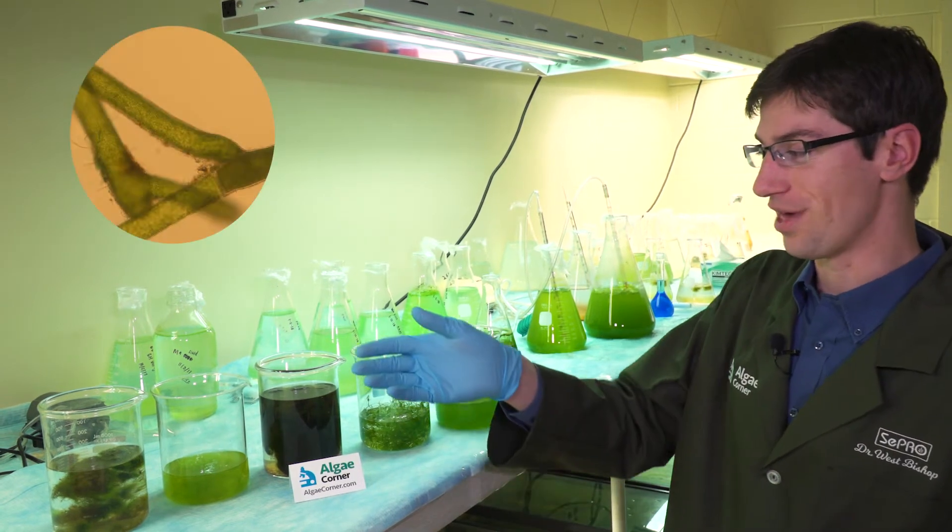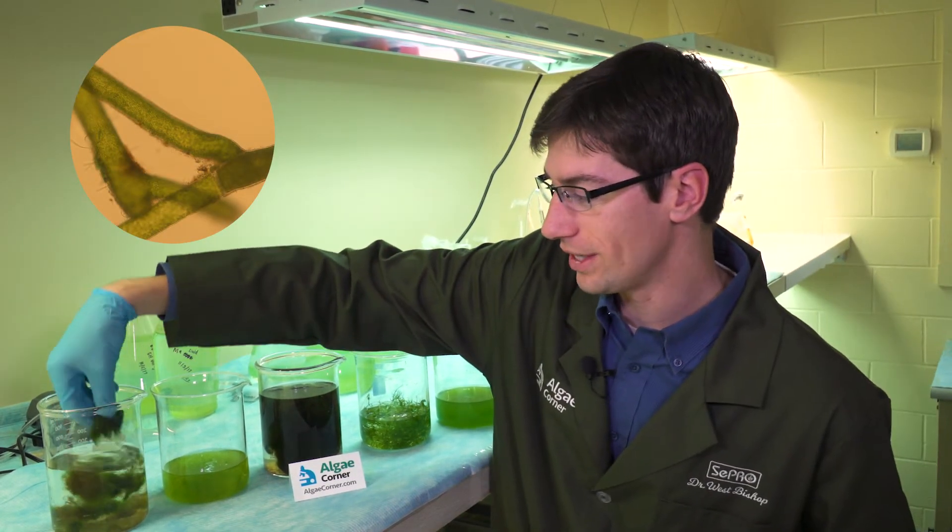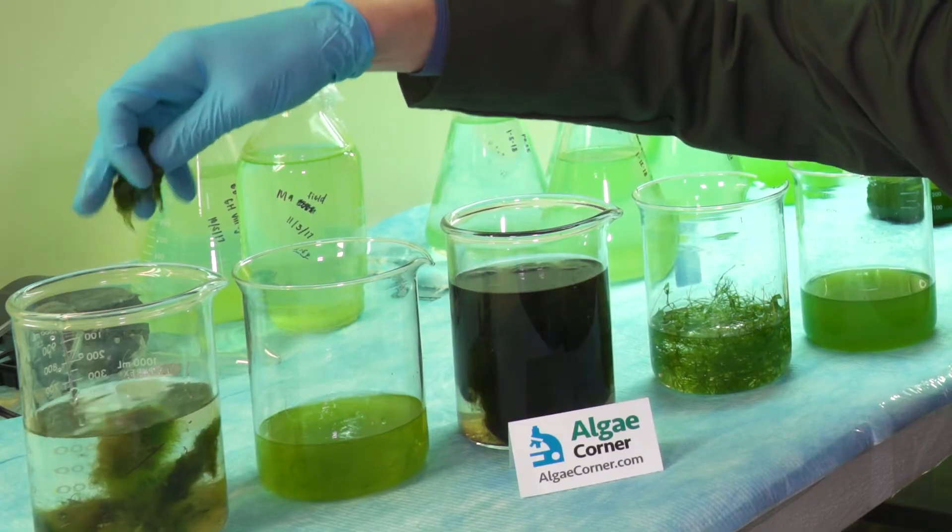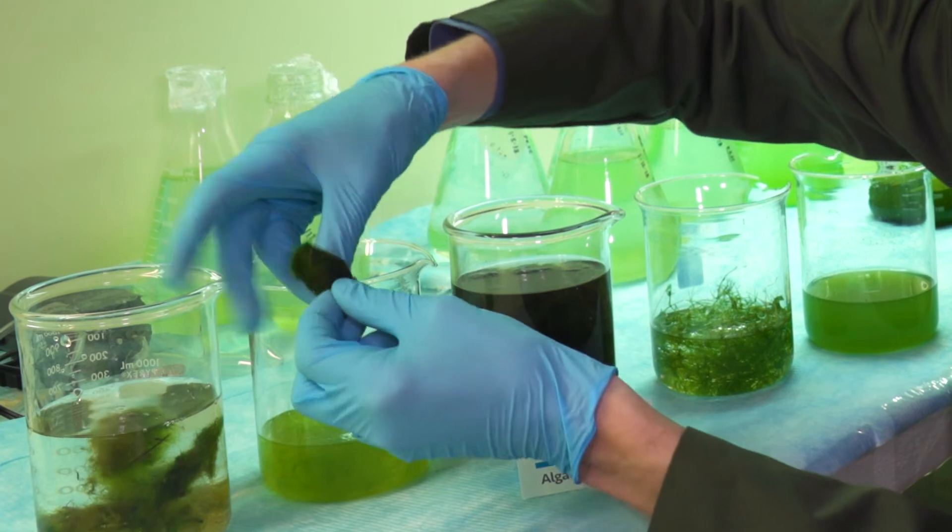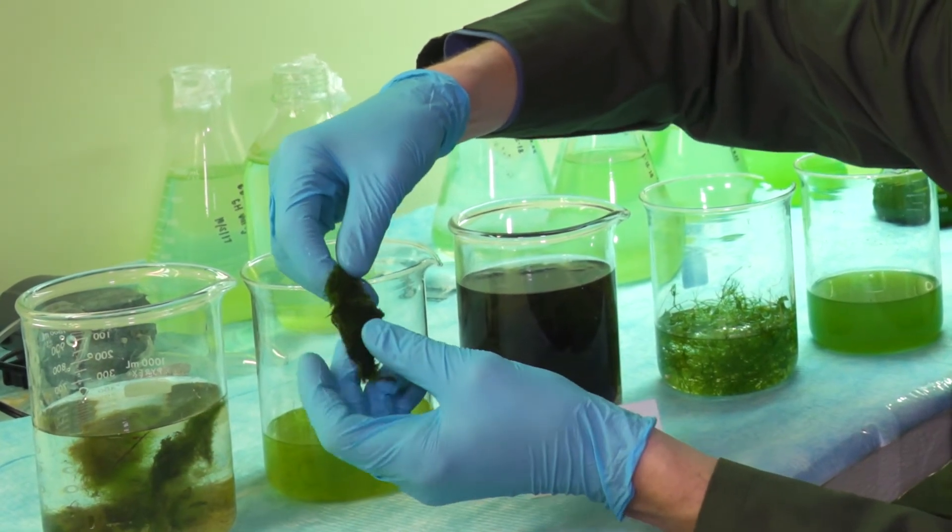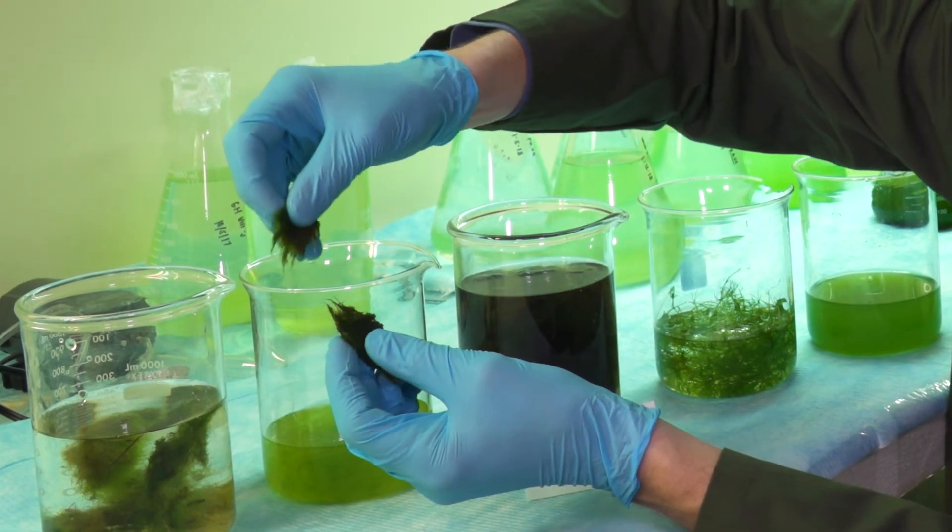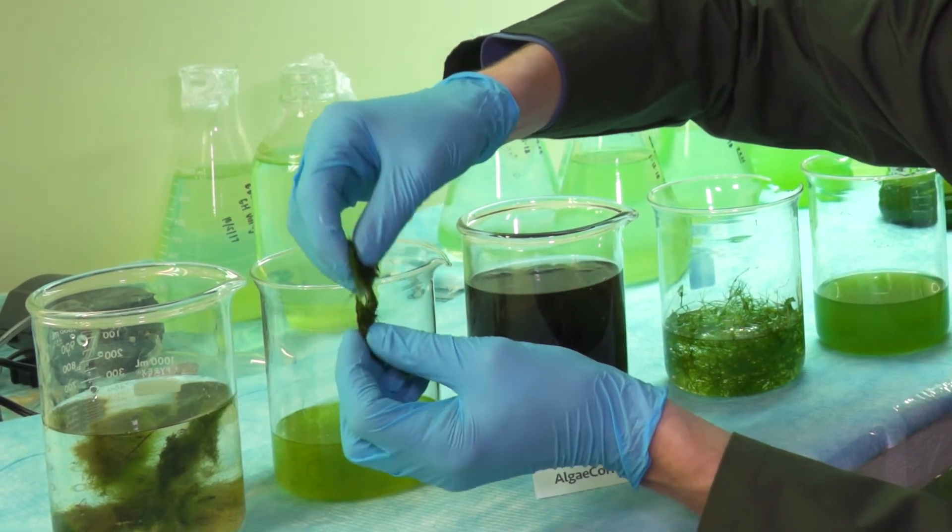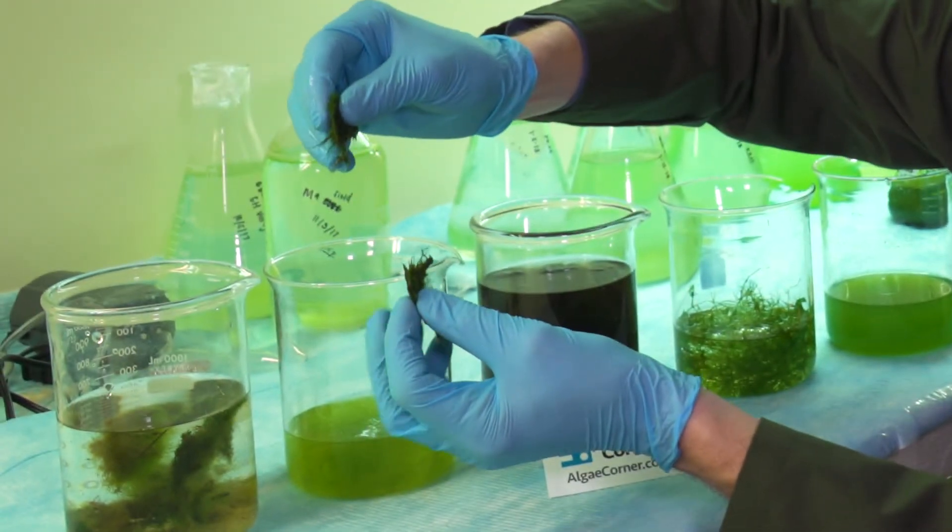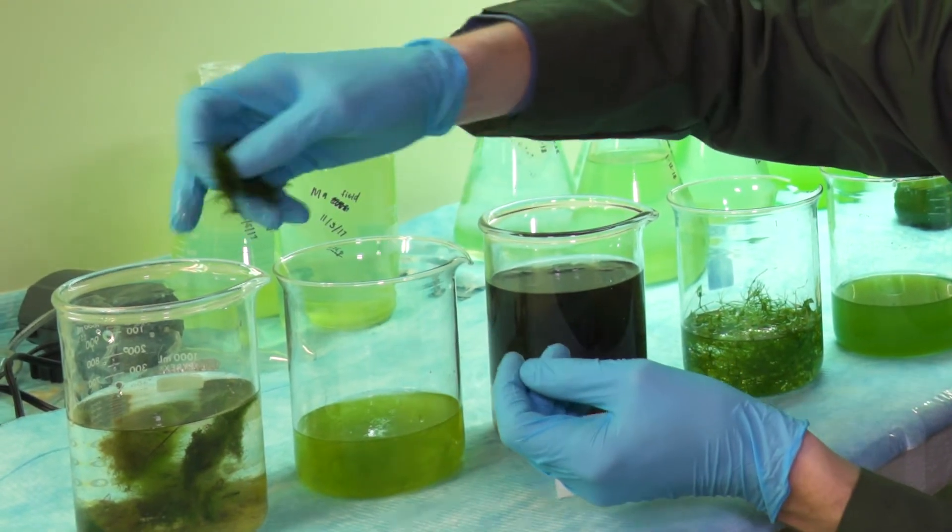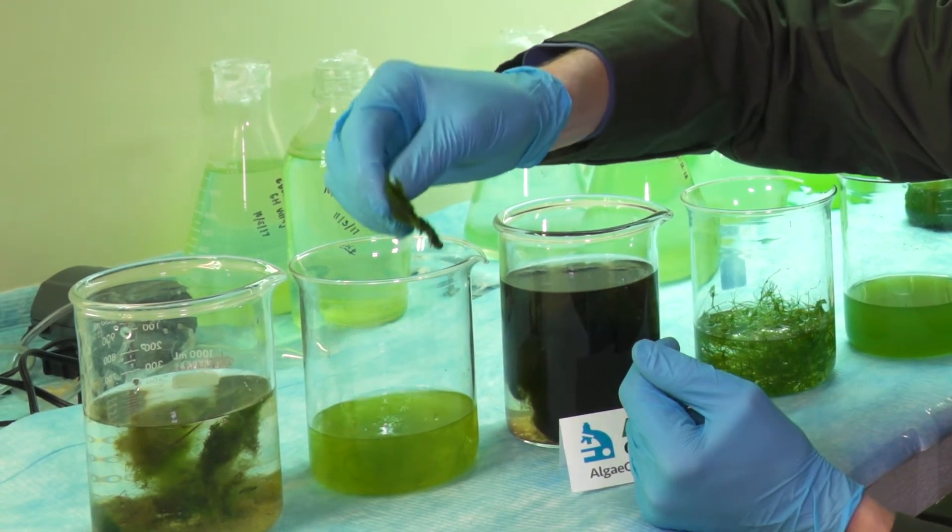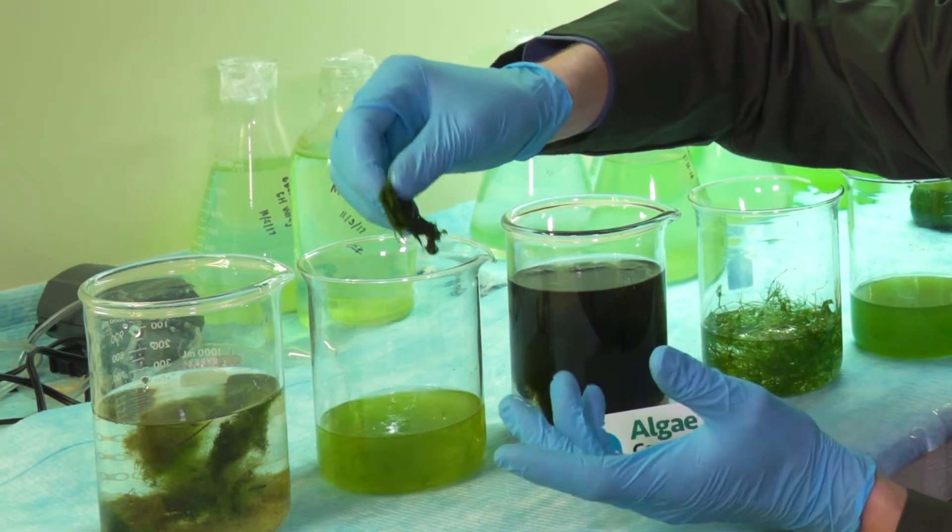The first thing I want to cover is Pithophora. This is a green filamentous algae, and you can grab it, squeeze it out, and it almost looks like a cotton ball. This is also known as cotton algae or horsehair algae. It does have little frills that come off of it, meaning it's branched. Often you can see little tiny dark specks—those are the akinetes or resting stage cells.